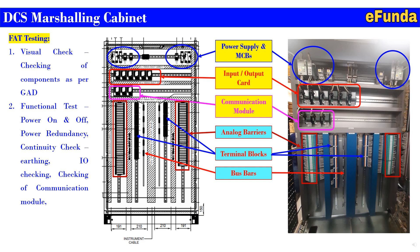Similarly, the terminal blocks where terminations are done and the bus bars connected are shown. This is how the things being checked during FAT are covered. It is important that one should understand the GA drawing — an approved GA drawing is required while performing the visual component-level checking based on the GA drawing.